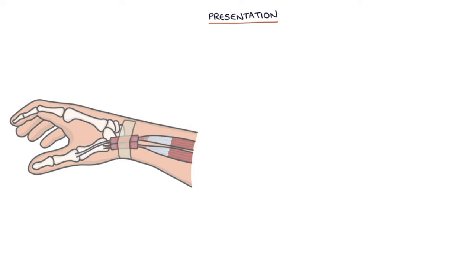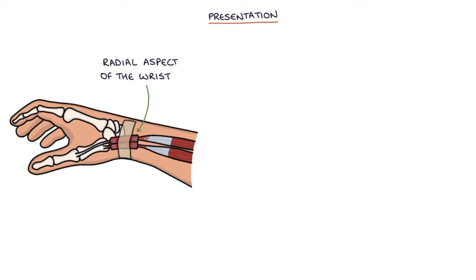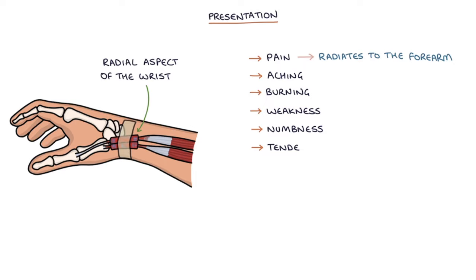Let's talk about the presentation. Patients present with symptoms at the radial aspect of the wrist, near the base of the thumb. Typical symptoms include pain, often radiating to the forearm, aching, burning, weakness, numbness, and tenderness.